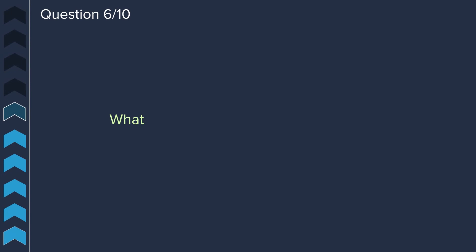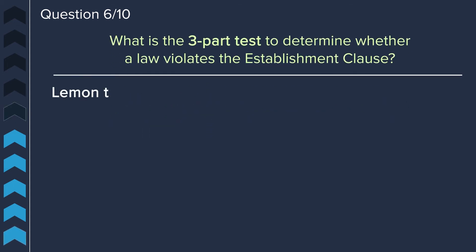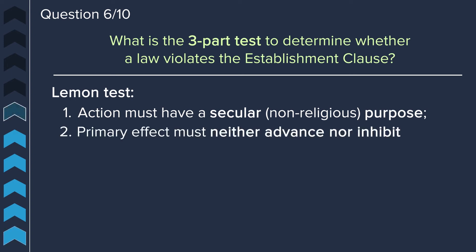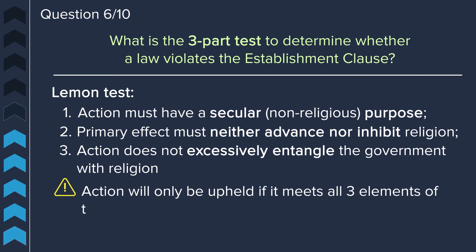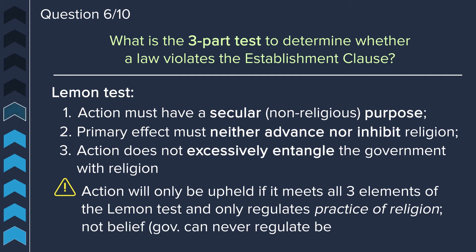Question six: what is the three-part test to determine whether a law violates the establishment clause? This is called the Lemon Test. First, the action must have a secular purpose. Second, the primary effect must neither advance nor inhibit religion. And third, the action must not excessively entangle the government with religion. An action will only be upheld if it meets all three elements of the Lemon Test, and only if it regulates the practice of religion, not a belief. Remember that the government can never regulate beliefs.